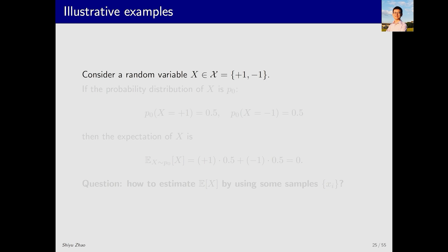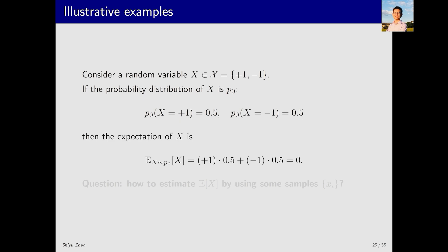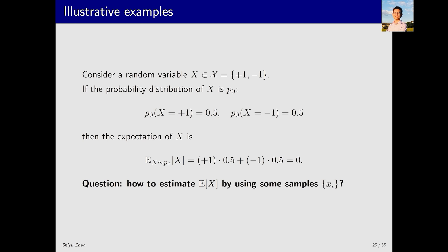Consider a simple scenario with a random variable x which belongs to a set of two elements: positive one and negative one. If the distribution of x is p0, then the probability of x equals 1 is 0.5 and the probability of x equals negative 1 is also 0.5. The expectation of x is positive 1 times 0.5 plus negative 1 times 0.5, which equals 0. Now consider the scenario where we do not know the explicit form of p0, or p0 is too complex to calculate. In such cases we are unable to compute the expectation by its definition.